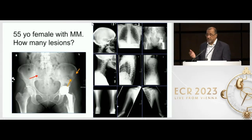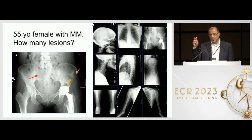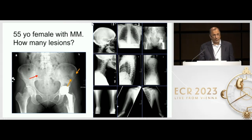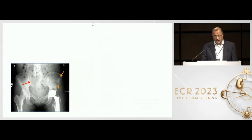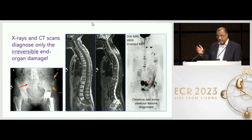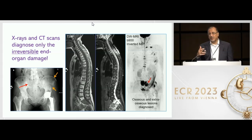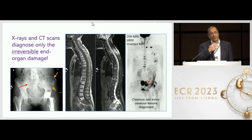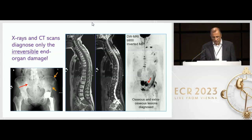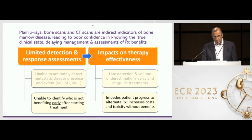If you looked at this lady, you can see there are three lesions that I've pointed out. The diagnosis of multiple myeloma is made, but you have no idea in terms of prognosis because you have no idea what's going on in the soft tissues. You can see there's an extra medullary lesion in the pelvis, and there's in fact much more myeloma than you realize from the use of just plain x-rays.